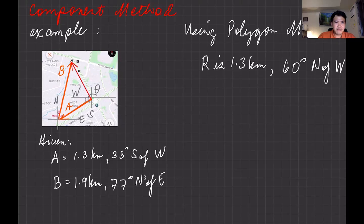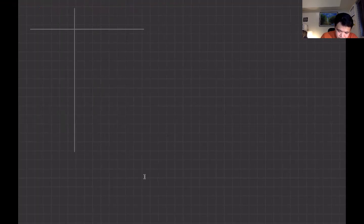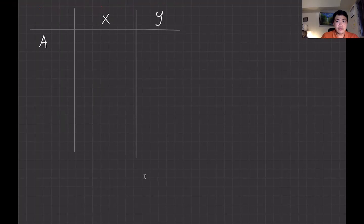If you watched my previous video about the first example, you should be able to follow me now. To keep it organized, you can write your solution in tabular form like this, so we can separate the x and y components. We have vector A and vector B as rows.